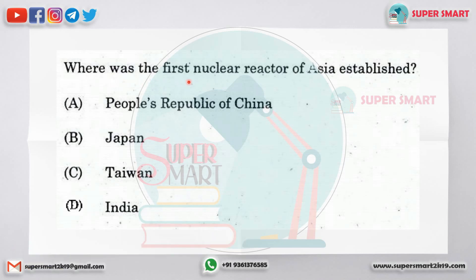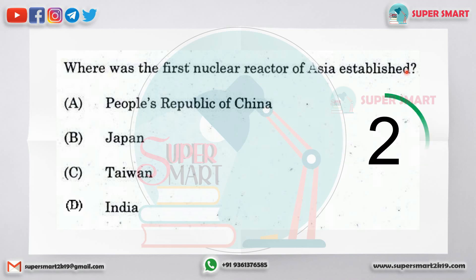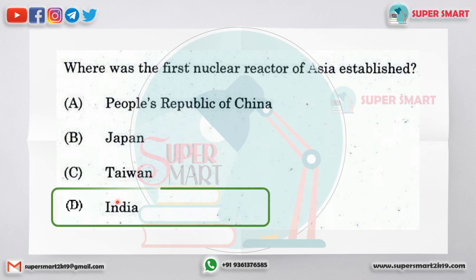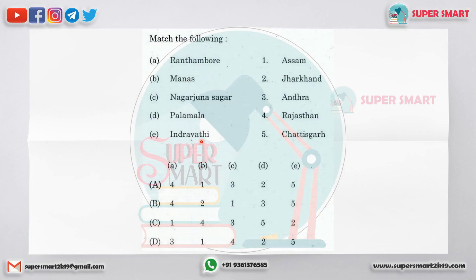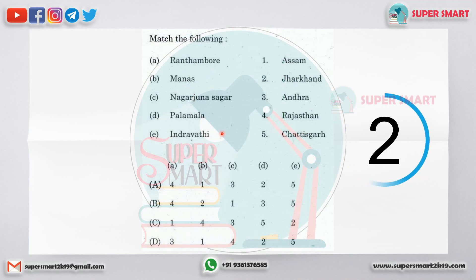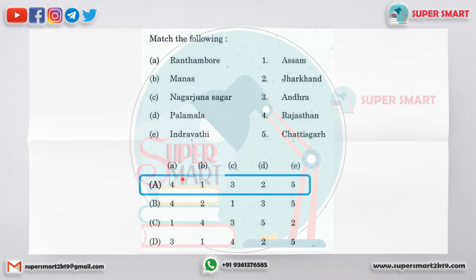Where was the first nuclear reactor of Asia established? Matching the places: the answer sequence is 4, 1, 3, 2, 5 — Rajasthan, Manas (Assam), Nagarjuna Sagar (Andhra), Palamau (Jharkhand), Indravathi (Chhattisgarh).